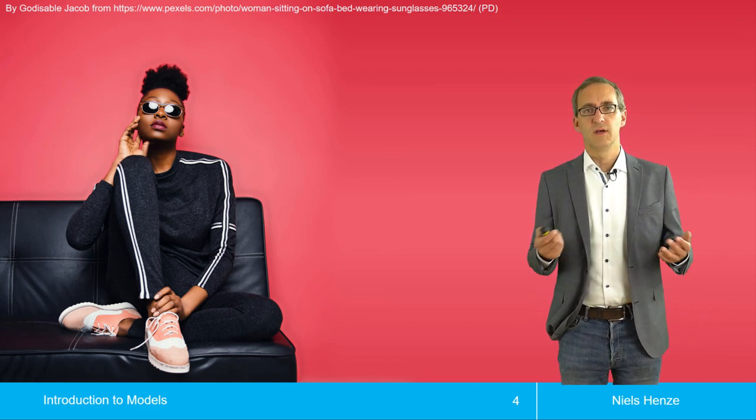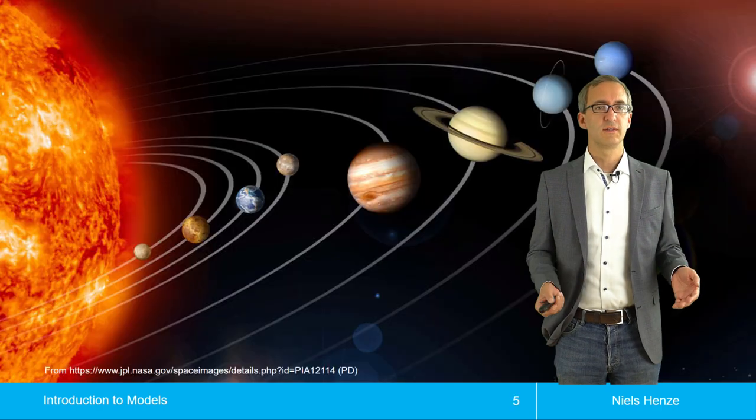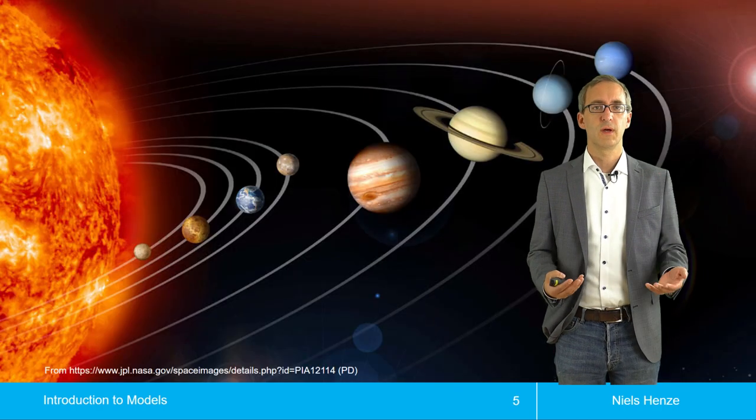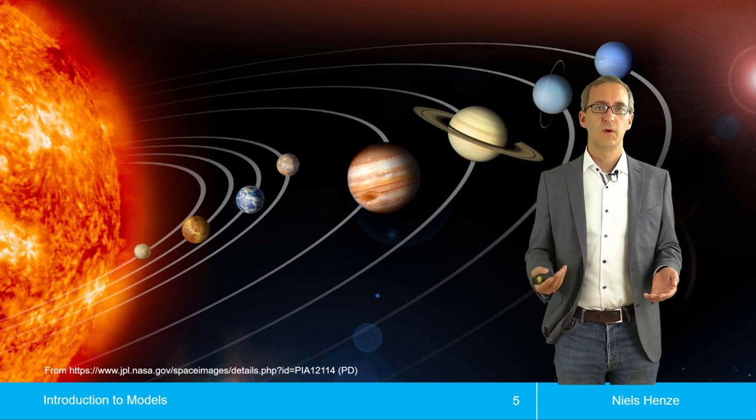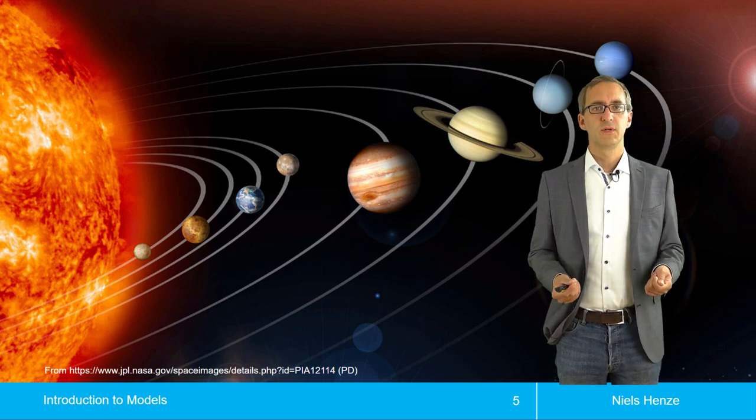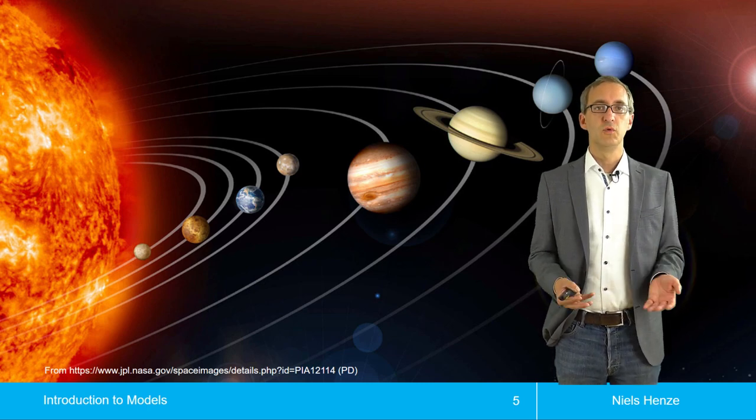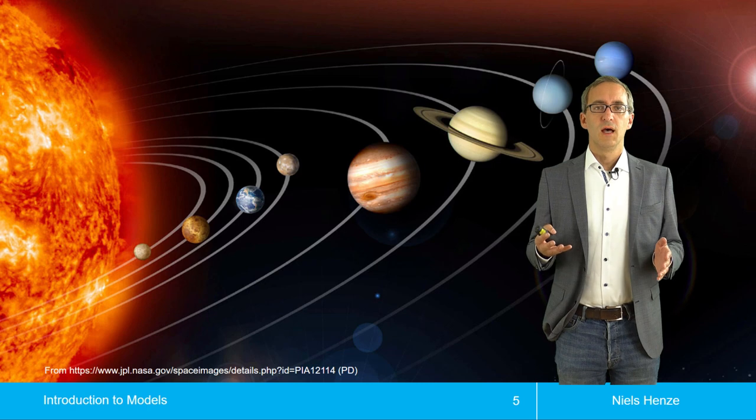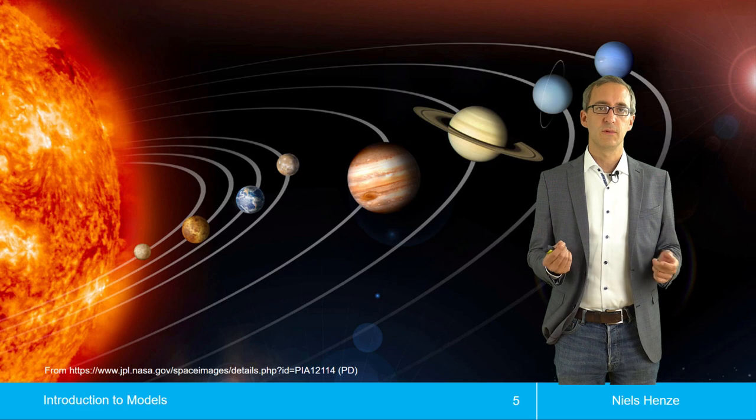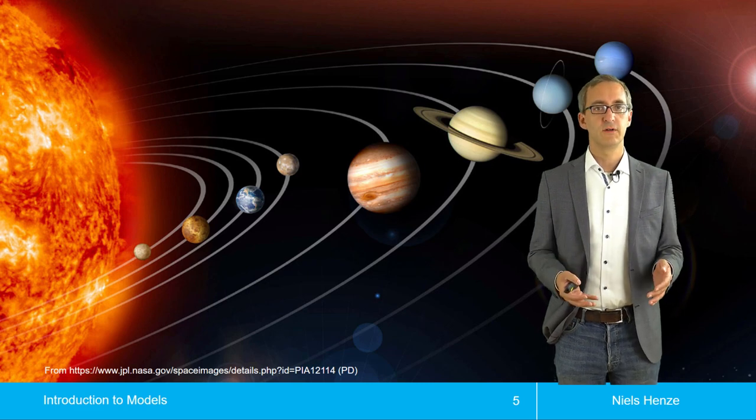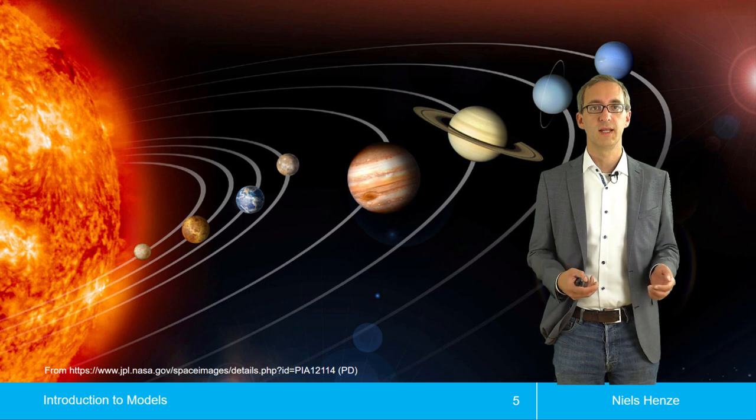But typically, if you are in a lecture, we would think about other types of models, models that describe phenomena like this. We have planets, they move around the sun, and now we want to predict how they move around the sun, or even that they move around the sun. And there are models that describe that a planet moves on an ellipsis around the sun. And this is very useful and enables us to make good predictions about the movement of planets.